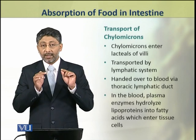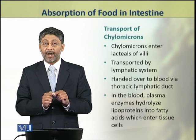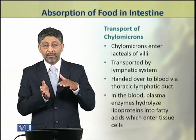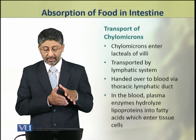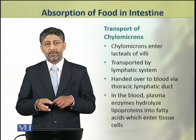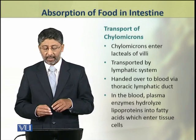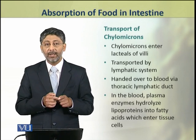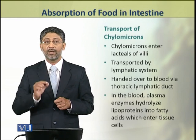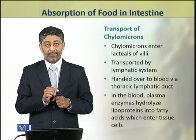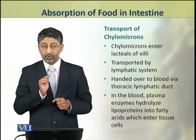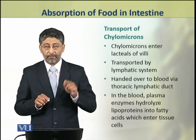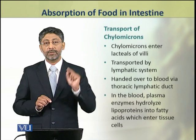The transport of digested fats, which are recombined again, occurs by the lymphatic system. These products of digestion of fat are handed over to the blood via the thoracic lymphatic duct, where all the lymph pours into the blood. In the blood plasma, enzymes are present which hydrolyze the lipoproteins again into fatty acids, which are then delivered to the body tissues and cells.